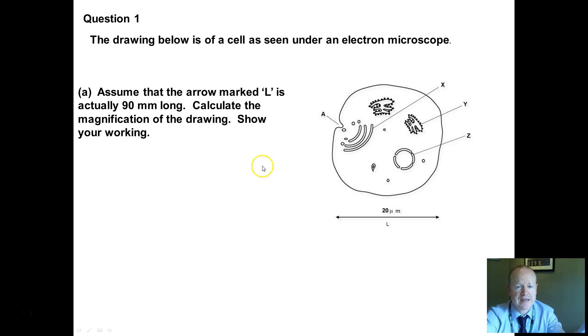Let's look at another example. Here we said assume the arrow marked L is actually 90 millimeters long. Calculate the magnification. Show your working. If L is 90 millimeters, you need to turn your 90 millimeters into micrometers first so you're using the same numbers. Micrometers and micrometers. Millimeters to micrometers times 1,000. 90,000 divided by 20 gives you times 4,500. Again, examples in your pack. Practice.